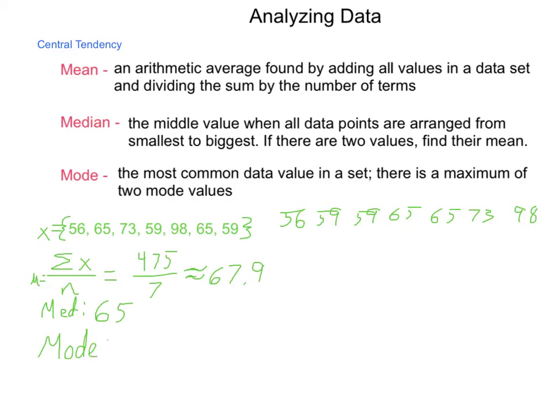Next, mode. Mode is the most common answer. Well, if we look here, we have 2 answers of 59, and we have 2 answers of 65. Everything else shows up only once. So, this is a bimodal system, and we say the mode is 59 and 65. We do not pick one or the other. We do not find their mean. We simply have 2 of them. Now, looking at this data set, we do have one other concept available here, and that is the concept of the outlier.